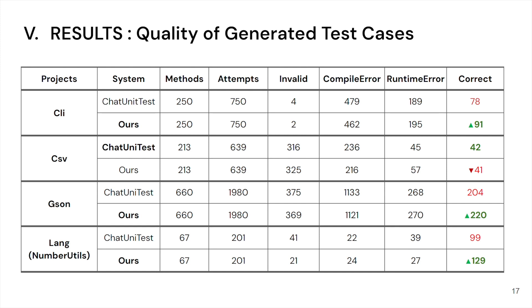Generally, our EvoUnitTest outperforms the baseline ChatUnitTest in terms of correct test cases, with the only exception being in the CSV project where we only generate 41 test cases correctly out of 639 attempts, compared to 42 correct test cases in the baseline.